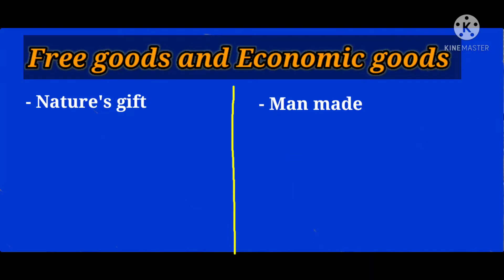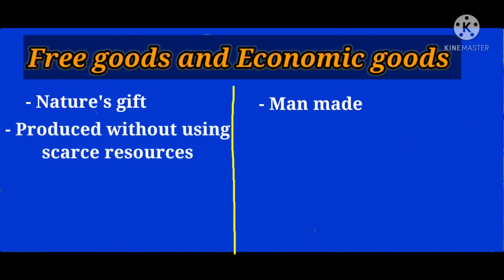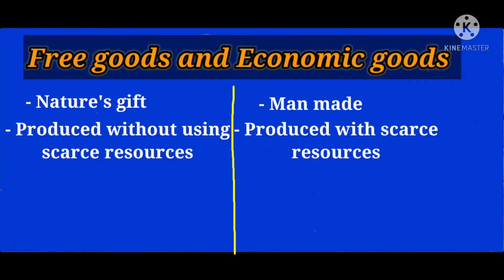A free good is a product that does not require any resources to make it, and so does not have any opportunity cost. As free goods are nature's gift, no resources are required to make them. But economic goods require limited resources to produce, and therefore have an opportunity cost.